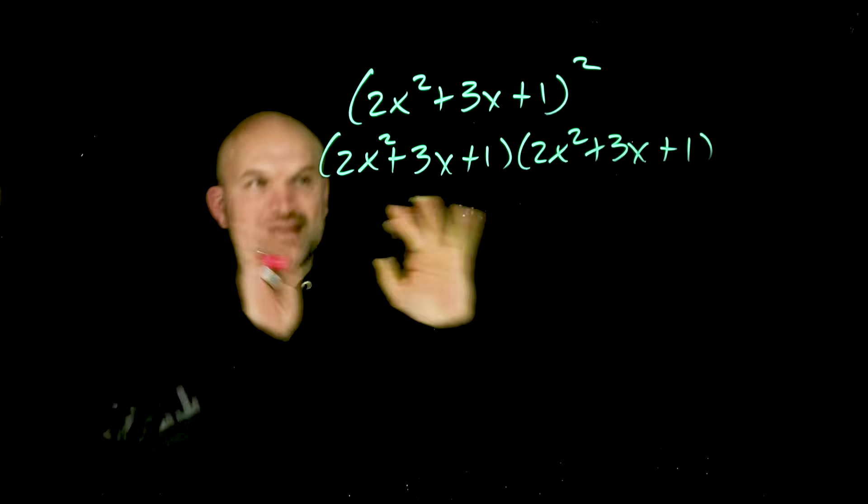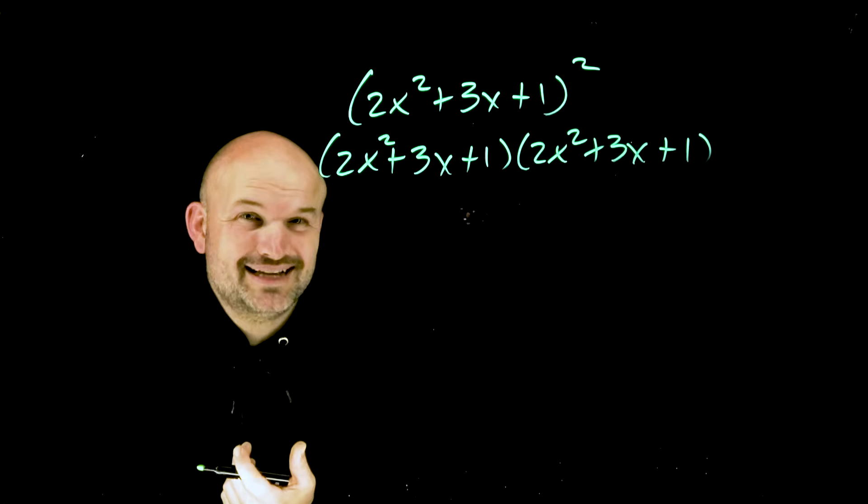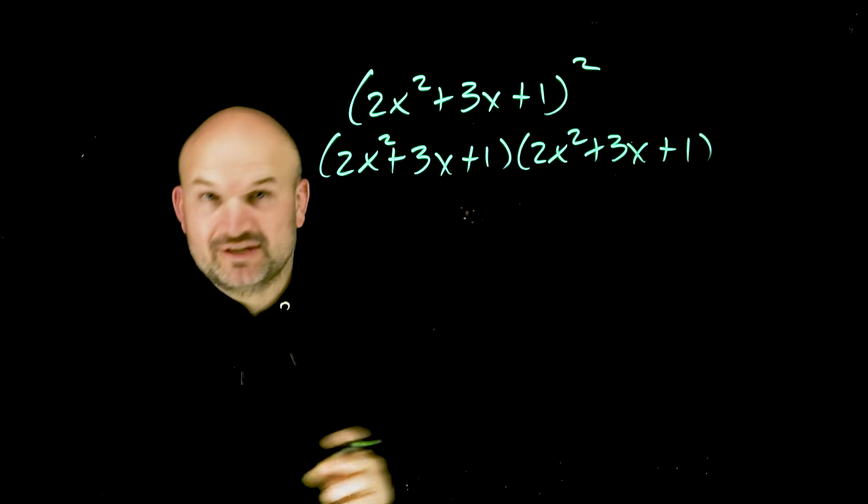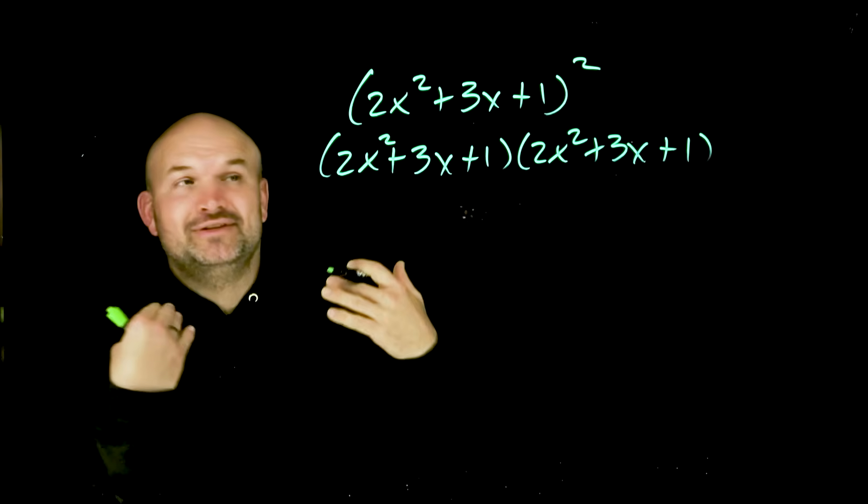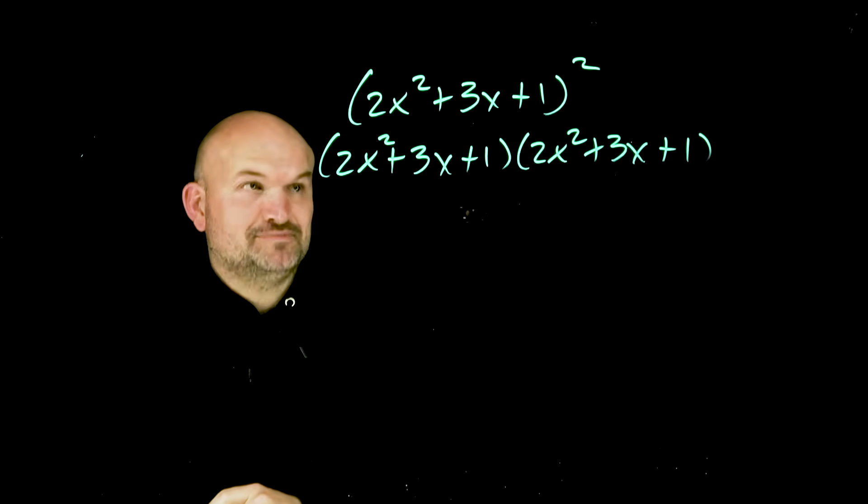Now a lot of times when students are looking at a problem like this, they immediately want to use the distributive property: 2x times everything, 3x times everything, 1 times everything. And yes, you can do that. I don't have a problem with it. Here's what I have a problem with though—that method is very easy to make mistakes with.